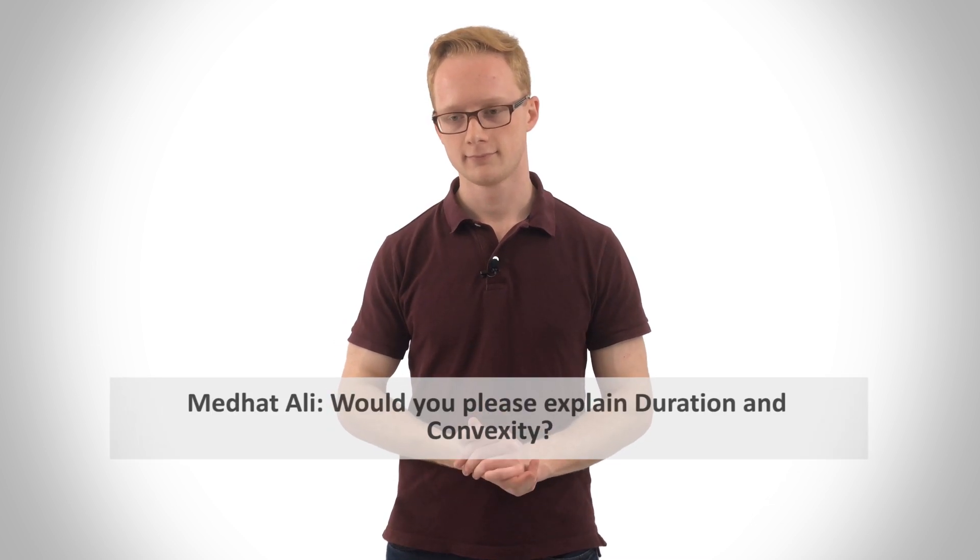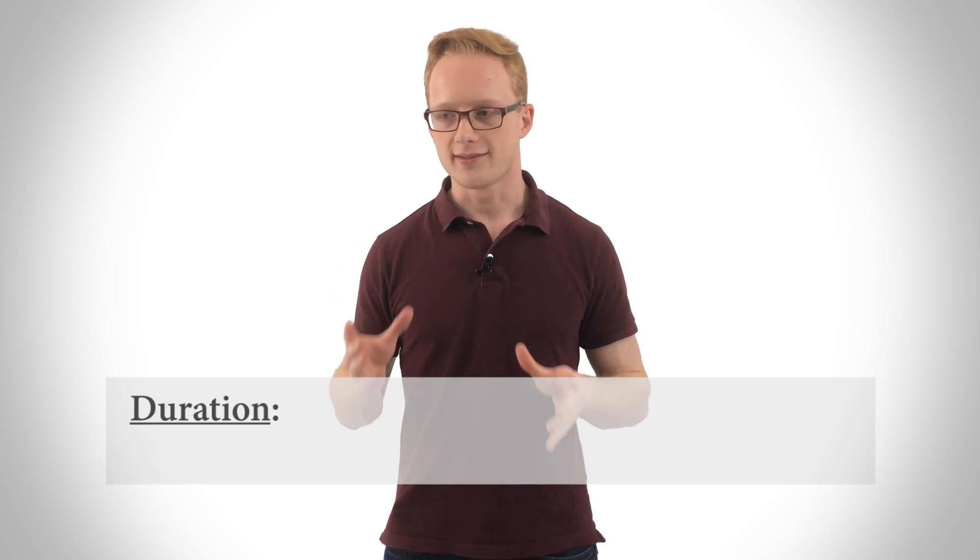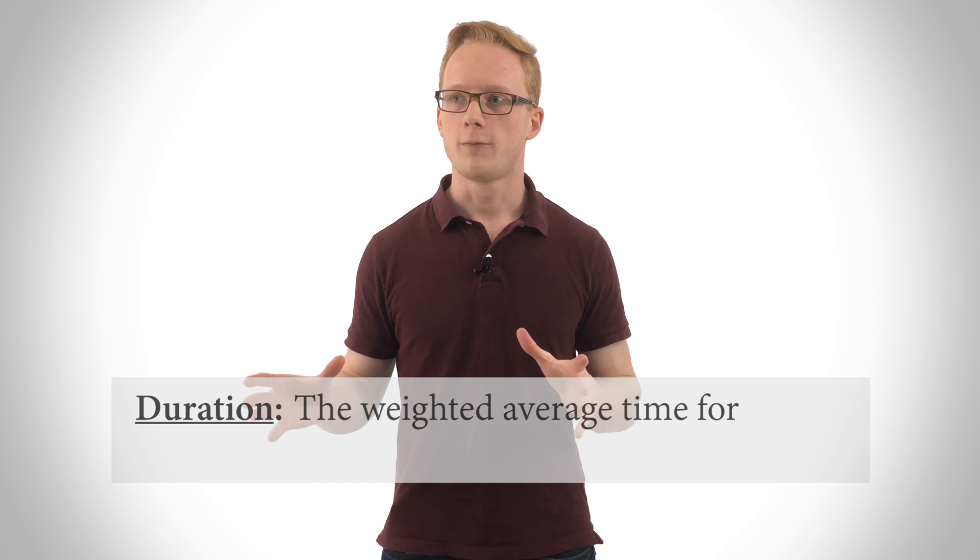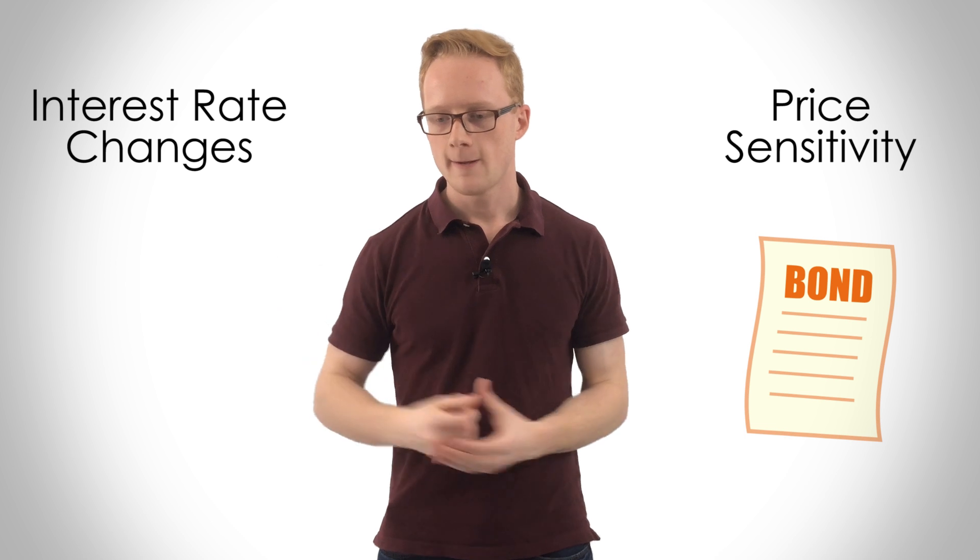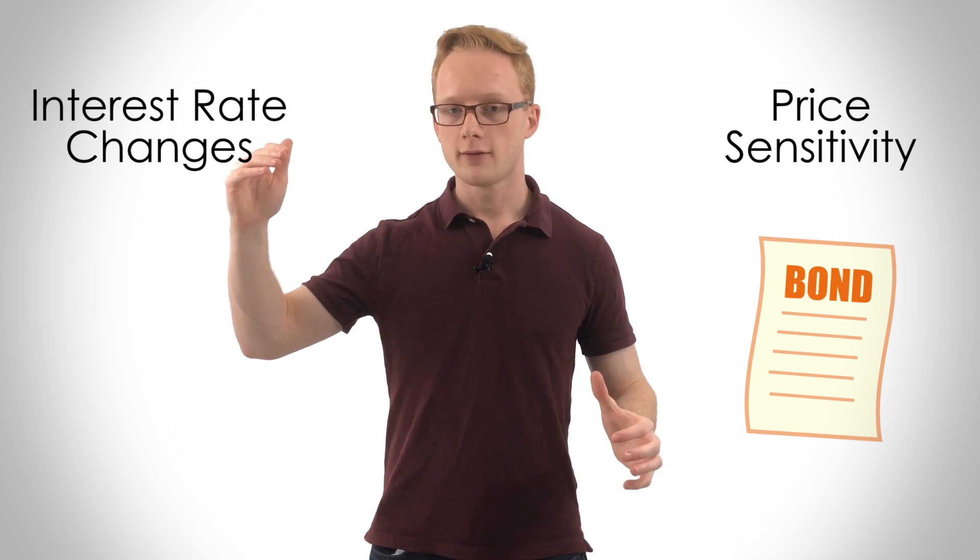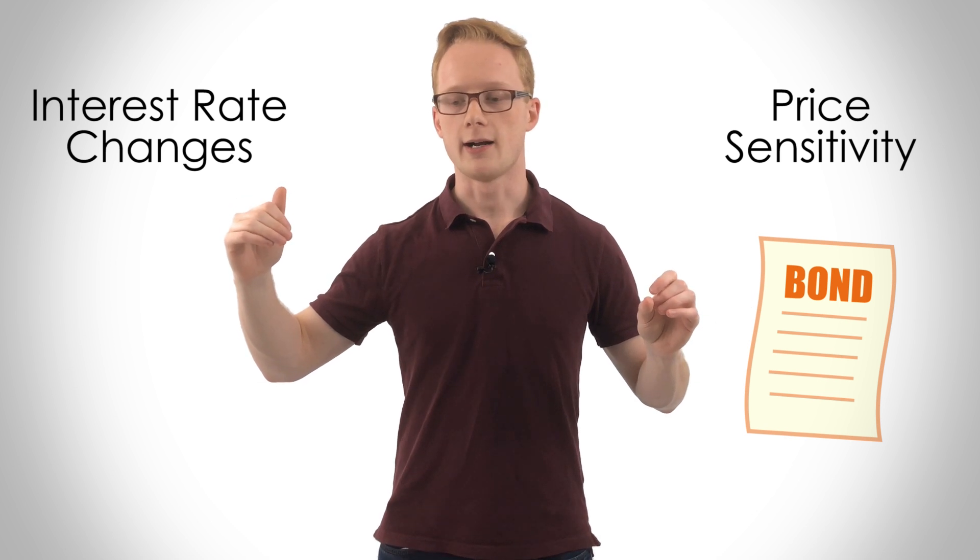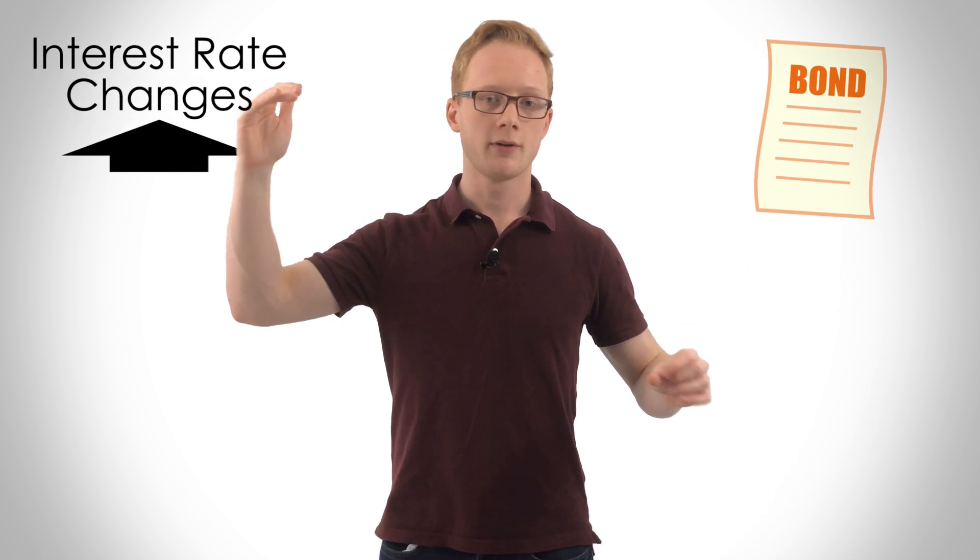Those are complex topics. The technical definition of duration is the weighted average time for which payments of a fixed income investment are paid. But you don't really need to understand that complex definition. You just need to know that duration measures a fixed income instrument's price sensitivity to interest rate changes. What I mean there is that interest rates have a negative correlation to a bond's price. As interest rates go up, bond prices typically go down. Duration measures the sensitivity at which bond prices go down when interest rates go up.